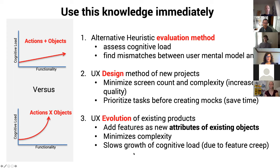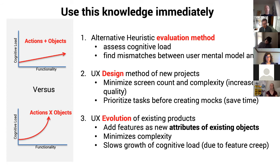And if you are where most people are in the real world — dealing with the evolution of something that exists — the main takeaways are: add features as new attributes of existing objects. Try really, really hard not to introduce the notion of a new object into a product that's already on the market and people are used to using. This will minimize complexity and slow the increase of cognitive load as you have the dreaded feature creep from version to version.